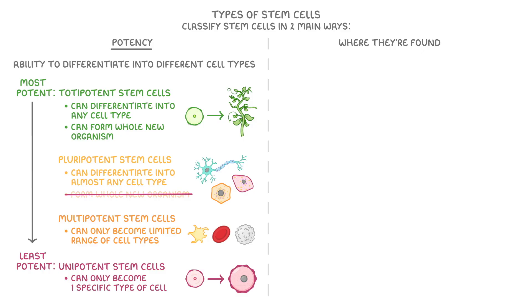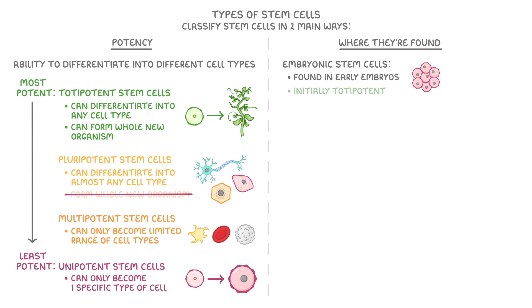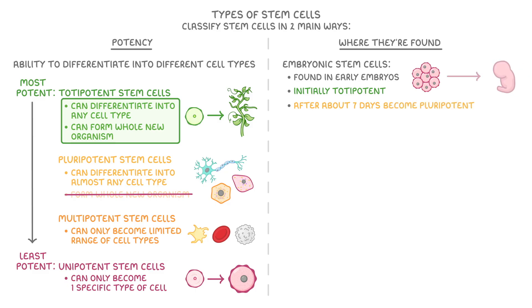Now let's look at how we classify animal stem cells based on where they're found. First, embryonic stem cells are found in early embryos. They're initially totipotent, so can differentiate into any cell type or even form a new organism. This is why if a human embryo splits whilst its cells are still totipotent, it can form two identical twins. After about seven days though, these stem cells become pluripotent, focusing on forming the different parts of the foetus.